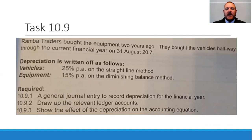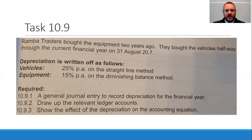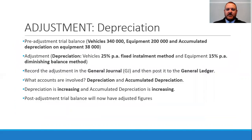With the diminishing balance method, the carrying value of equipment is actually reducing each year — you use that reducing amount, which is why the depreciation balance gets smaller and smaller each year. Whereas with the straight-line method, you work on the normal cost without it being reduced, which is why it's always the same amount each year.